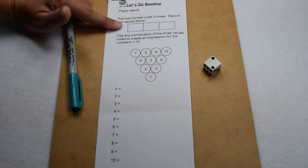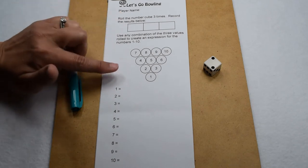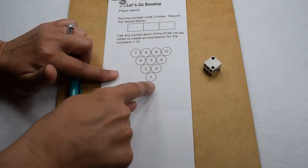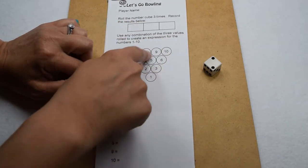To start with, we're going to roll our number cube three times and record our results below. From there, we're going to take those three numbers and in any combination possible try to come up with the solutions one through ten. So that means whatever three numbers we have, we could automatically cross those off.